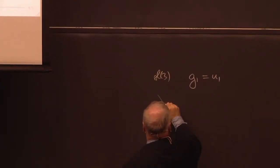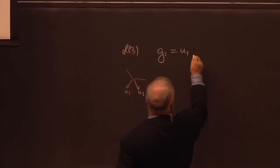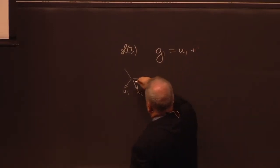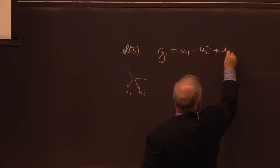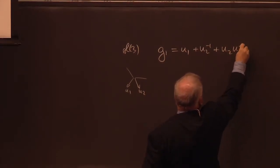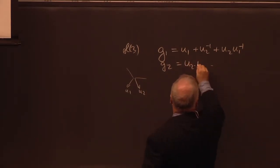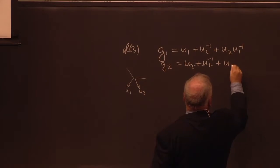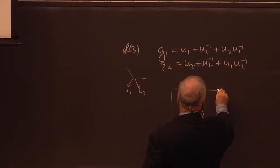We have G1, which was U1. So this was a picture here. You had U1, U2. And G1 was U1 plus U2 inverse plus U2 times U1 inverse. And similarly, G2 is equal to U2 plus U1 inverse plus U1 times U2 inverse.